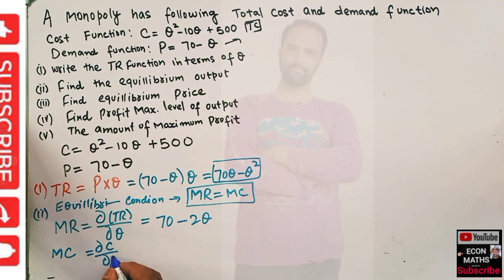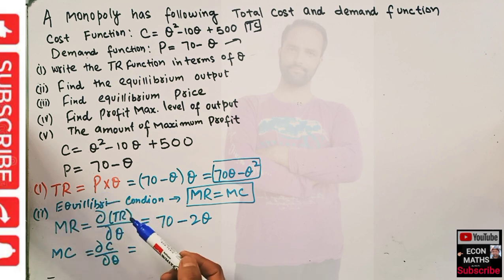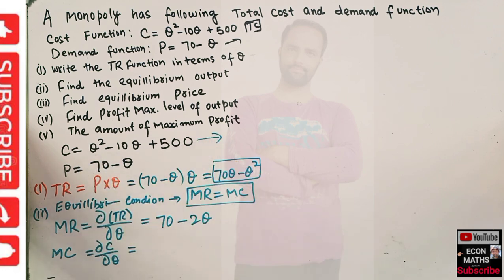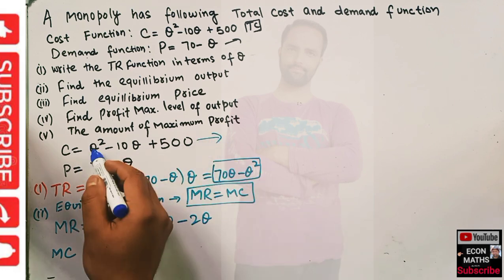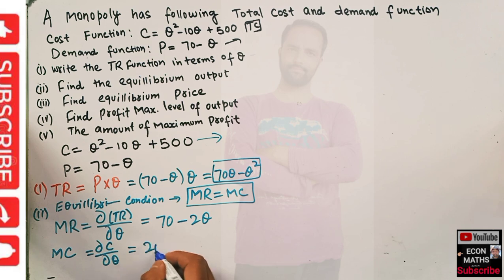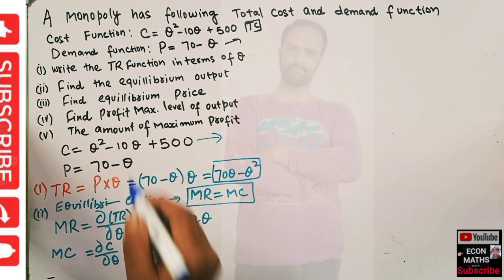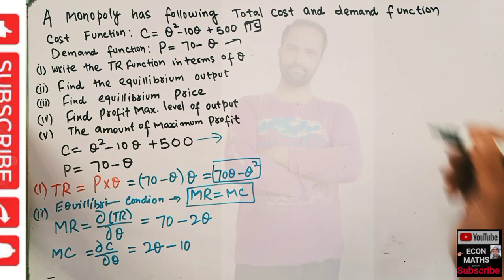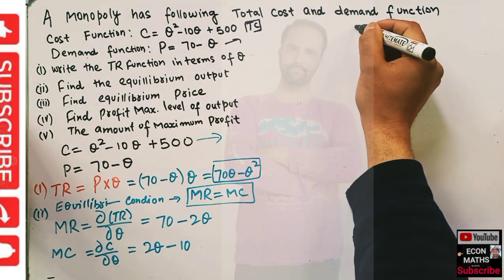Marginal cost is simply the derivative of the cost function with respect to quantity. The cost function is q squared minus 10q plus 500. Taking the derivative: the derivative of q squared is 2q, the derivative of 10q is 10, and the derivative of the constant 500 is zero. So our marginal cost is 2q minus 10.